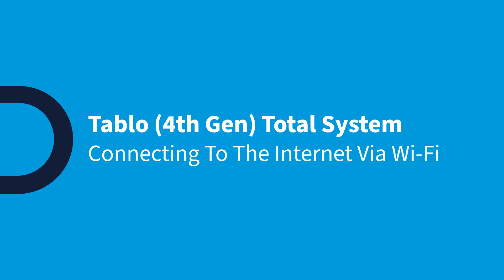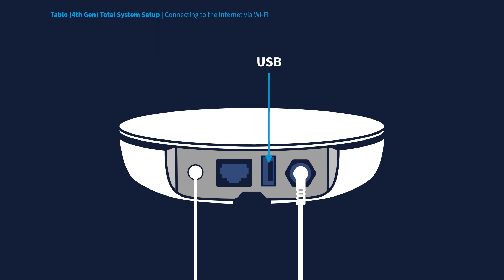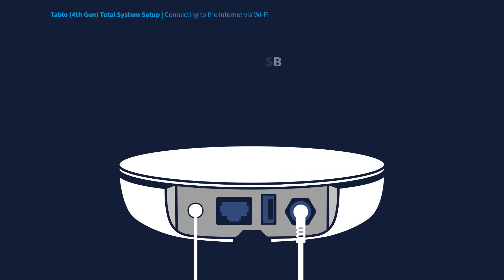Tableau features dual-band Wi-Fi connectivity, so you can place your antenna and Tableau device in the best possible location for over-the-air TV signal reception. To connect your Tableau to your home network wirelessly, first you must make sure that there is nothing plugged into the Ethernet port, as well as the USB port on your Tableau device.